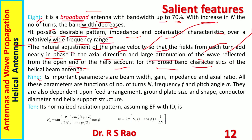Point nine: the important parameters are beam width, gain, impedance, and axial ratio. All these parameters are functions of number of turns, frequency, and pitch angle alpha. They are also dependent upon feed arrangement, ground plate size and shape, conductor diameter, and helix support structure.